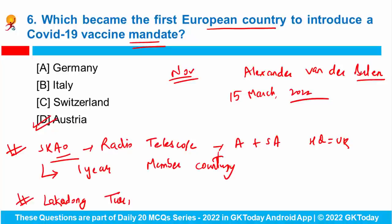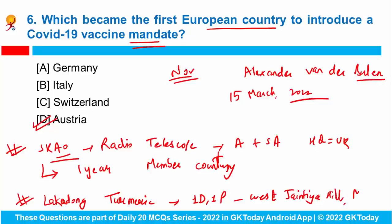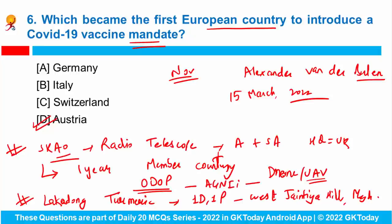Lekadong Turmeric has been identified under the One District One Product initiative as a product for export from West Jaintia Hills, which lies in Meghalaya. Recently, drone or UAV technology was tested in the West Jaintia Hills for payload delivery to solve connectivity issues for Lekadong Turmeric farmers. ODOP partnered with the Agni I Mission for using this drone technology.